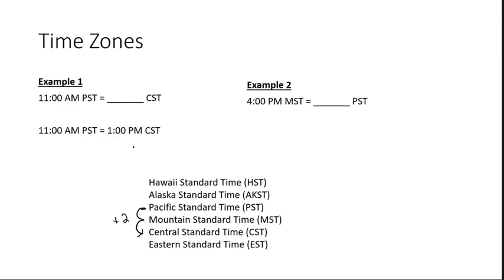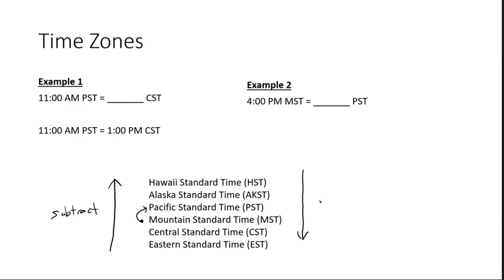Example two: converting 4 p.m. Mountain Standard Time to Pacific Standard Time. We're going from mountain back to Pacific, which means going west, so we subtract. It's one time zone back, so 4 minus 1 gives us 3 o'clock. The time in Pacific Standard Time would be 3 p.m.